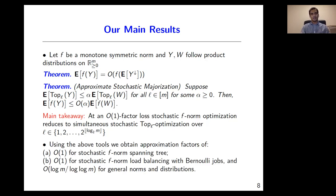Using these tools, we obtain approximation factors of order 1 for stochastic f-norm spanning tree, order 1 for stochastic f-norm load balancing with Bernoulli jobs, and order log m over log log m for general norms and general job size distributions.